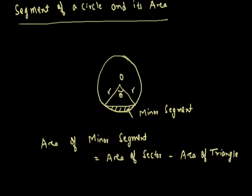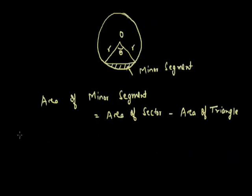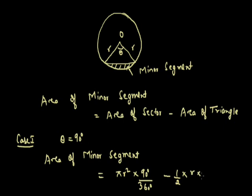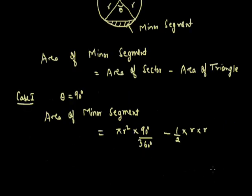Case 1: suppose the central angle is 90 degrees. Then area of minor segment = πr²(90/360) minus ½ × base × height. Since theta is 90 degrees, the base is r and height is r, giving πr²/4 minus ½r².